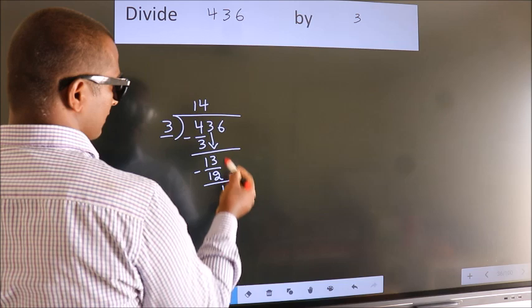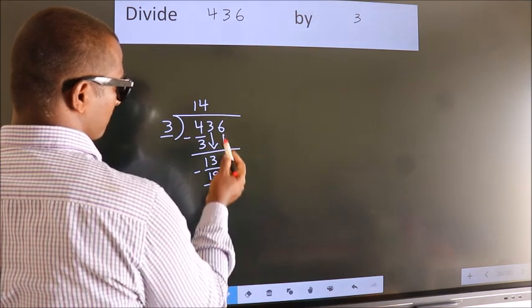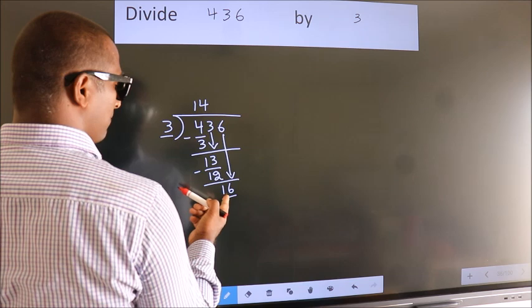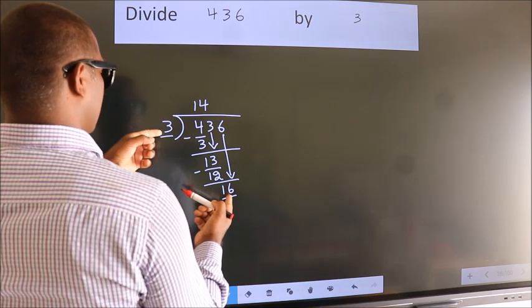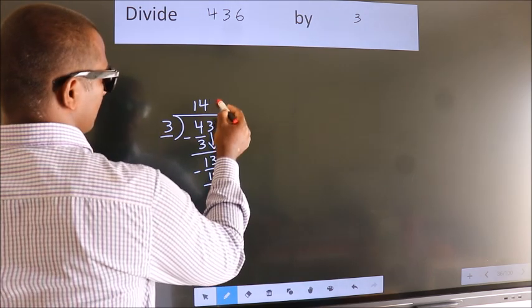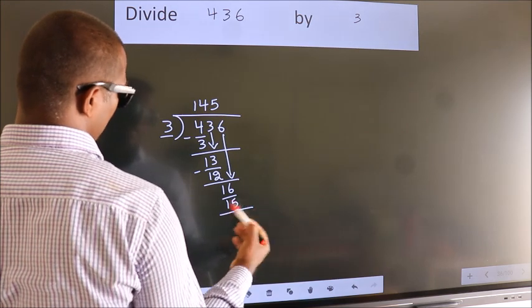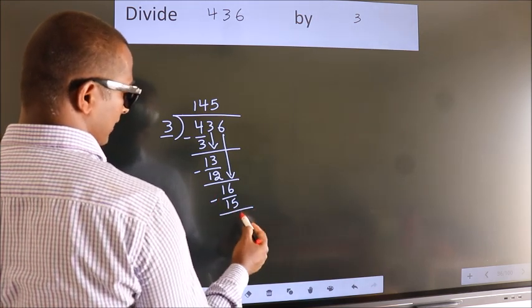After this, bring down the beside number. So, 6 down. So, 16. A number close to 16 in the 3 table is 3 times 5 equals 15. Now we subtract. We get 1.